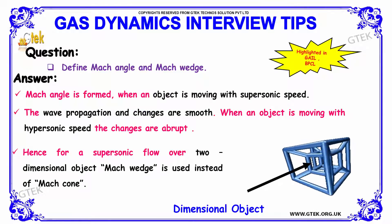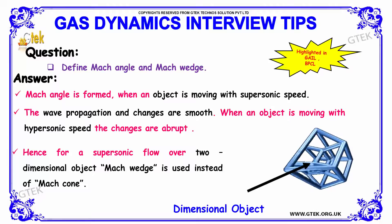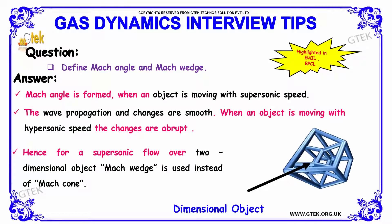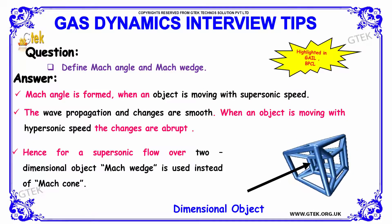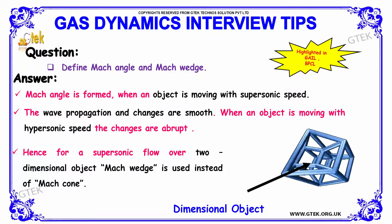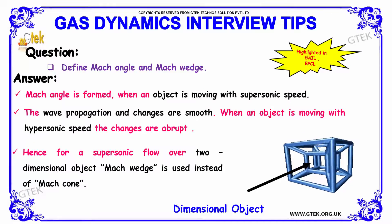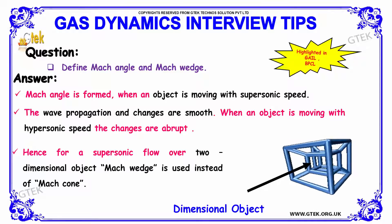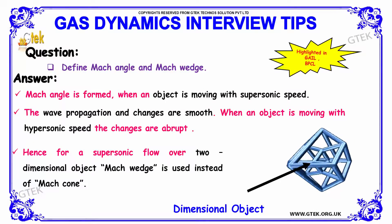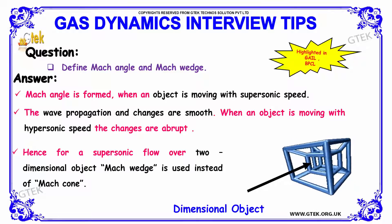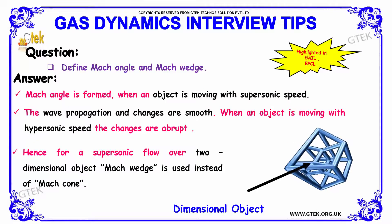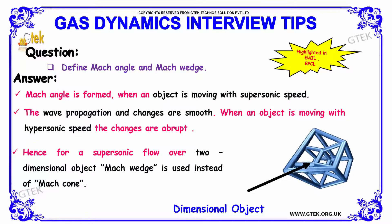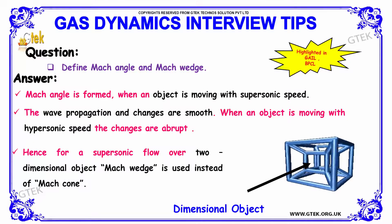Next question: define Mach angle and Mach wedge. Mach angle is formed when an object is moving with supersonic speed, and the wave propagation and changes are smooth. When an object is moving with hypersonic speed, the changes are considered to be abrupt. Hence, for a supersonic flow over a two-dimensional object, Mach wedge is used instead of Mach cone.